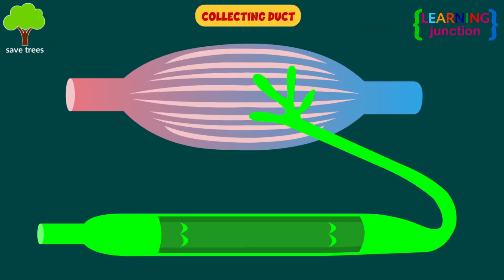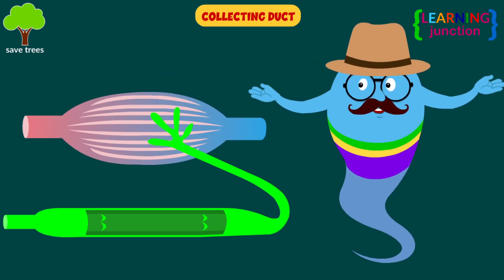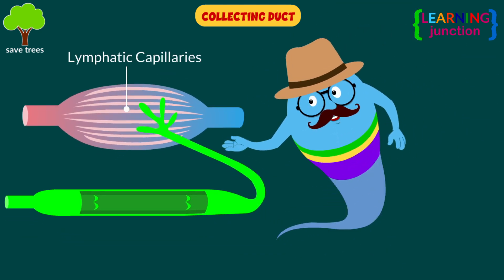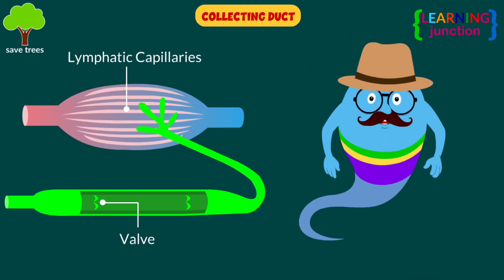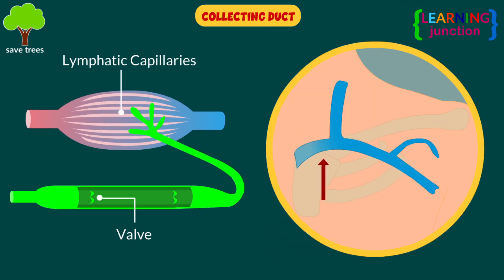Collecting ducts: extra fluids draining from tissues and cells are moved into collecting ducts and return to the bloodstream through your subclavian vein.